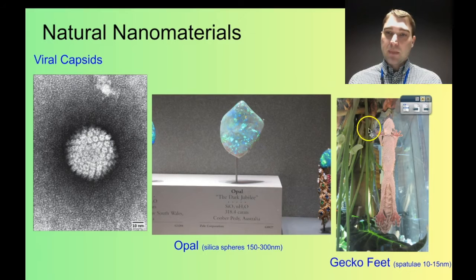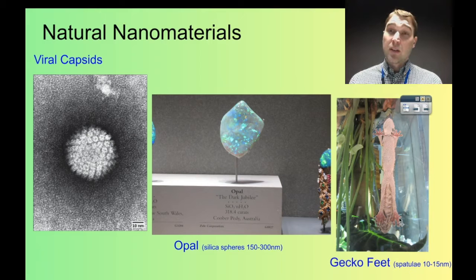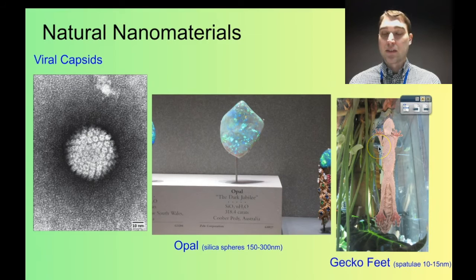Here's a gecko — I took this photo when I was at the California Academy of Sciences in San Francisco. It's a gecko attached to a glass wall. The reason why geckos can attach to glass walls is that on their feet they have little ridges, and those ridges have ridges, and those ridges have ridges called spatulae. The size of those spatulae is between 10 and 15 nanometers. The whole foot gets a really large surface area, and you get interesting van der Waals effects between the feet of the gecko and whatever surface they're touching — that's why they're very sticky.